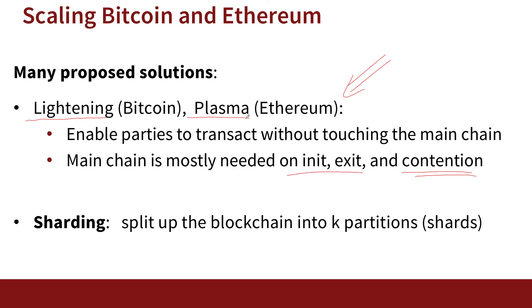The second scaling idea is sharding, which is basically splitting up the blockchain into multiple partitions — each partition is called a shard. The difficulty with sharding is when you need to move value from one shard to another; that's where complications happen because you need to communicate between different partitions of the blockchain. These are proposals specifically designed for scaling Bitcoin and Ethereum. As I said, there are more recent blockchains being proposed that can inherently handle hundreds of thousands of transactions per second, so in the long run the scaling issue is likely not going to be a problem.